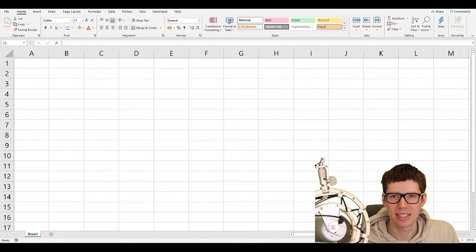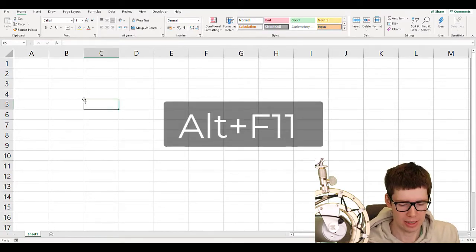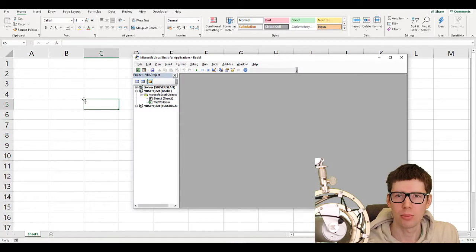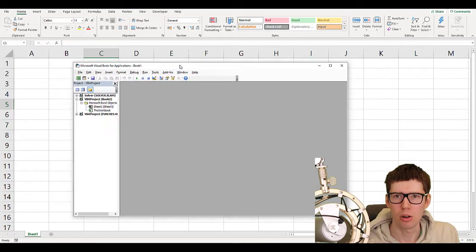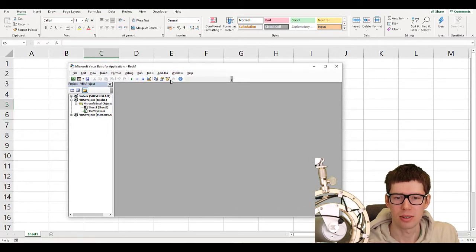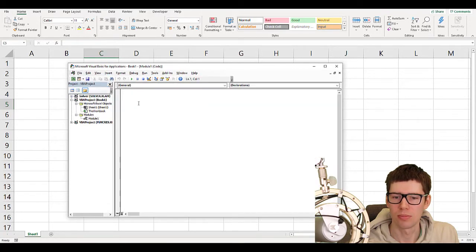To start programming in Excel, open up a new workbook and then hit Alt F11. This will open up the VBA editor, the Visual Basic for Applications Editor. In order to start a new module where we're going to write the script, we can click on Insert and then on Module. And then we can start typing the code.